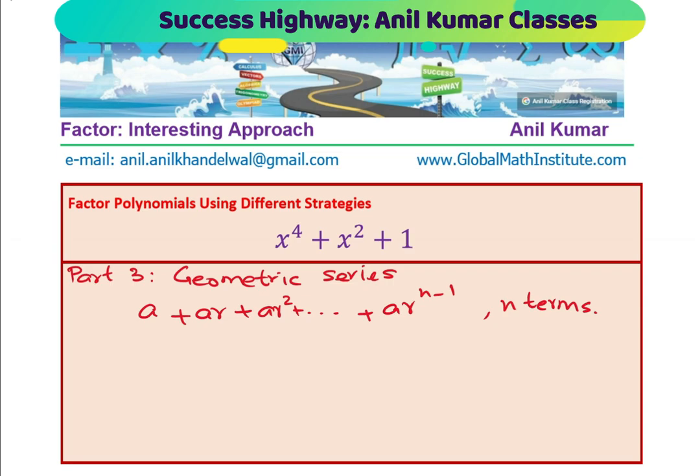In that case, the sum of the series for n terms is A times R to the power of n minus 1 over R minus 1, correct?